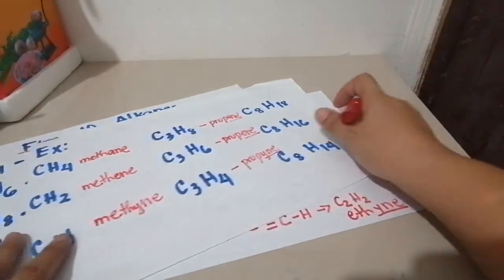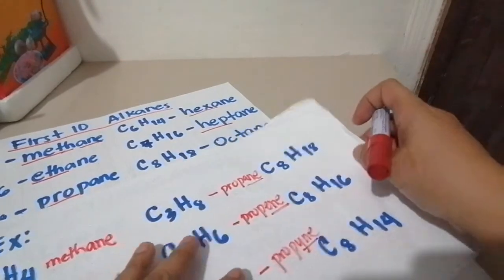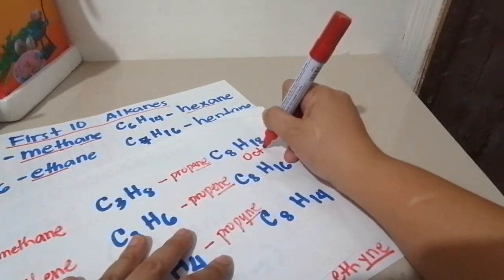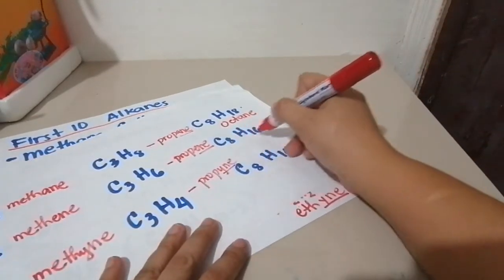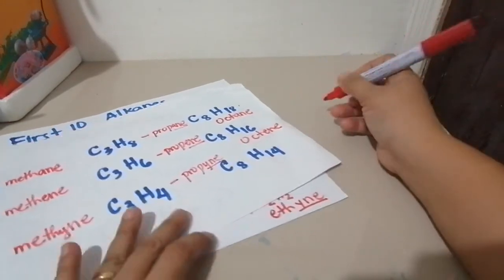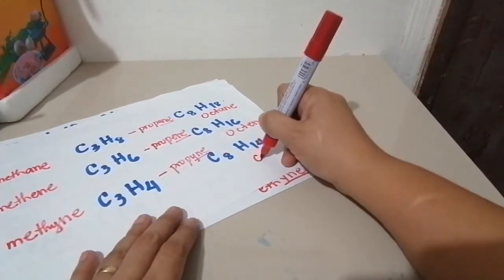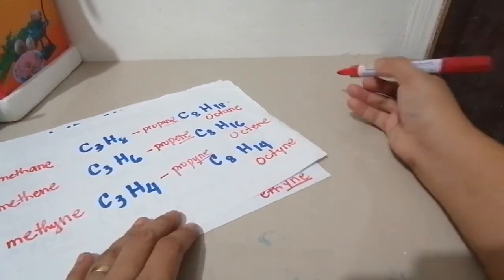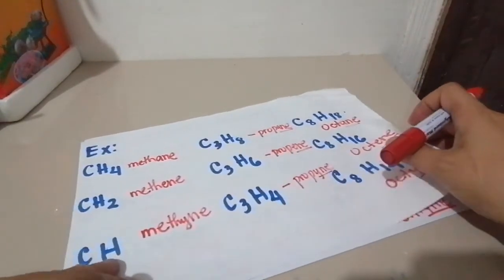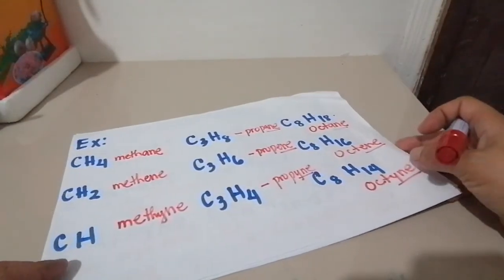Next, carbon 8. Carbon 8 is octa. Since this is an alkene, this is named as octene. Next, this is times 2, this is octane. Times 2 minus 2, that will be octyne. So that's how we name hydrocarbons using the different kinds of hydrocarbons: alkane, alkene, and alkyne.